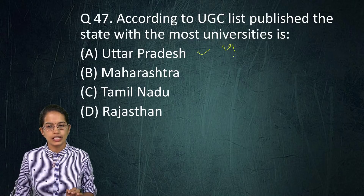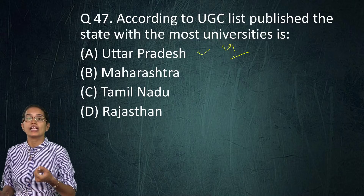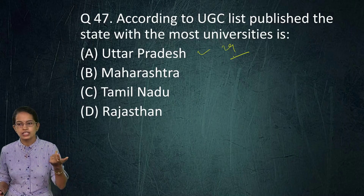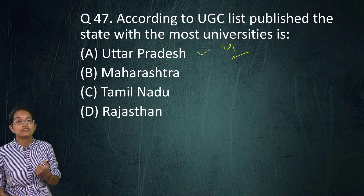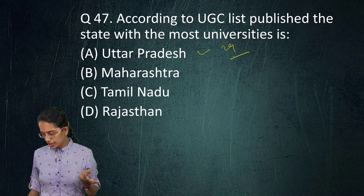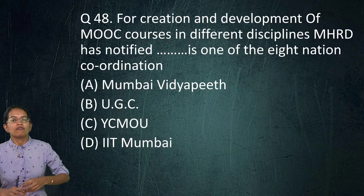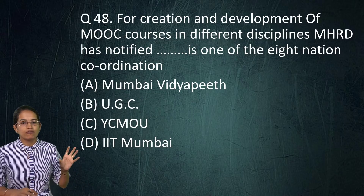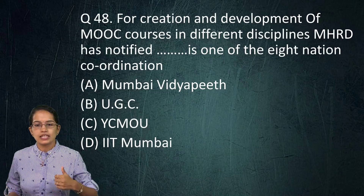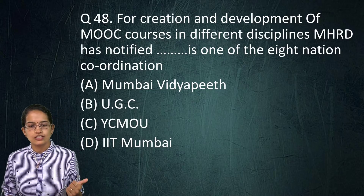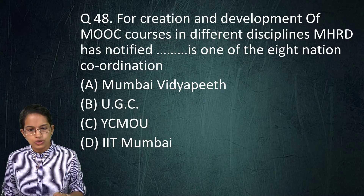According to UGC, the state with the highest proportion of universities is Uttar Pradesh, with more than 29 universities. States like Arunachal Pradesh, Meghalaya, Mizoram, Nagaland, and Sikkim do not have state universities.